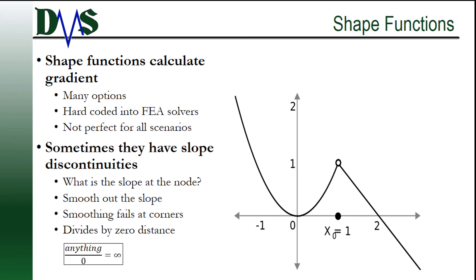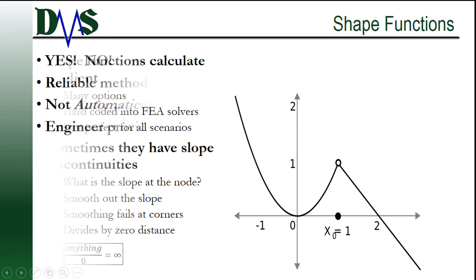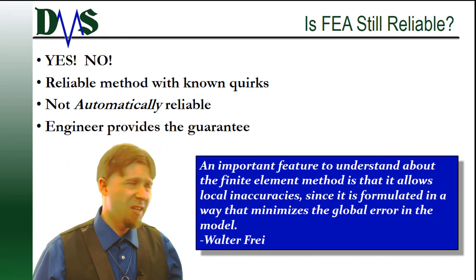If the elements were to get infinitely small, you would have zero distance between element centers and that really exaggerates the discontinuity. It's annoying but it's predictable from the theory of shape functions. Stripped down to the essentials, stress singularities are just a quirk of FEA mathematics.